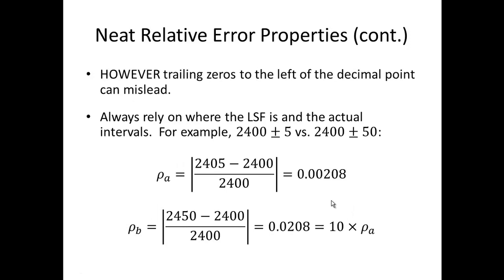Let's look at another example where we have trailing zeros to the left of the decimal point. Take as two examples: 2400 with three significant digits, meaning 2400 plus or minus 5; versus 2400 plus or minus 50, which would be two significant digits. In the first case, we have a relative error of 0.00208. In the second case, where we have the maximum value of 2450, we end up with a relative error of 0.0208 - ten times different - signifying the two significant digits.